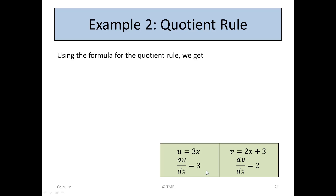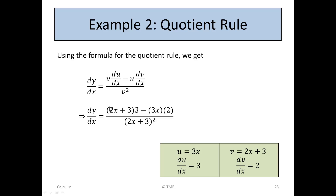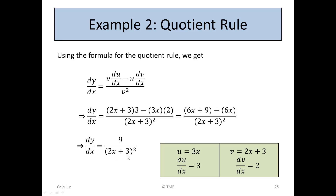The formula for the quotient rule is: dy/dx = (v·(du/dx) − u·(dv/dx)) / v². This is in the tables. Substituting: dy/dx = (2x + 3)(3) − (3x)(2), all over (2x + 3)². Expanding: 6x + 9 minus 6x, over (2x + 3)². The 6x terms cancel, leaving dy/dx = 9 / (2x + 3)². That is the derivative of the original function 3x / (2x + 3).